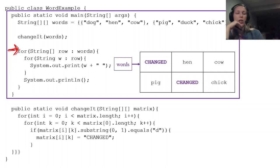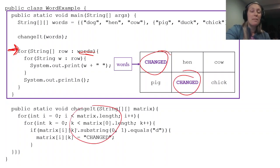So I use a for-each loop here just to show you how it's a nice way to print off things. But it's going to print off changed, hen, cow, pig, changed, chick. So words had these changes even though this happened to matrix. Matrix and words pointed to the same location, so anything that happened to matrix also happened to words. I didn't return anything. This method was a void method, right? I don't have to return anything for those changes to be persistent.